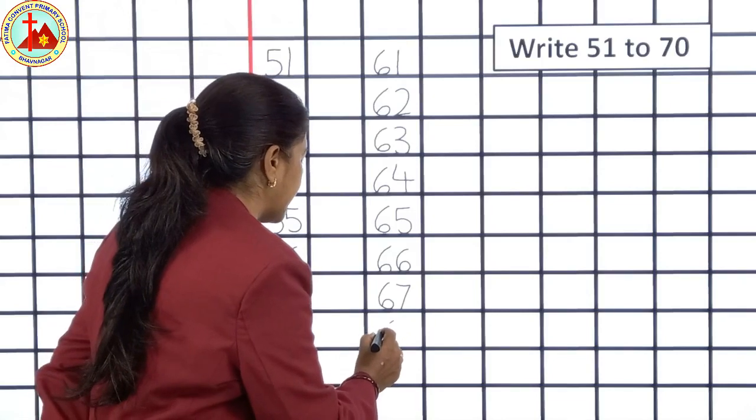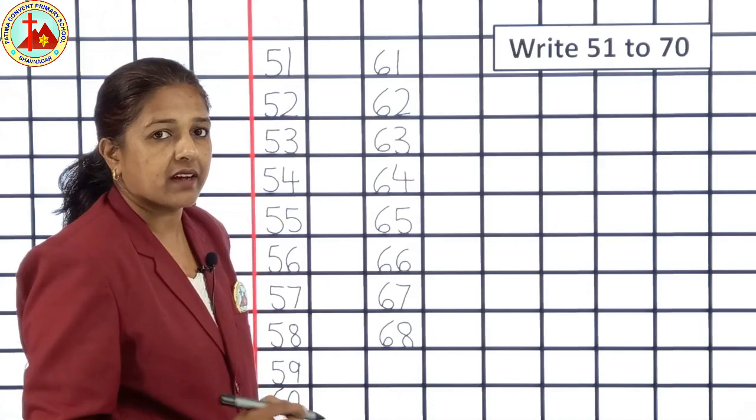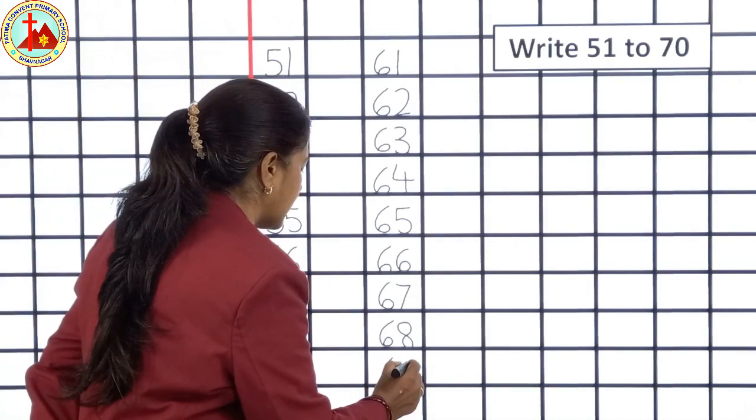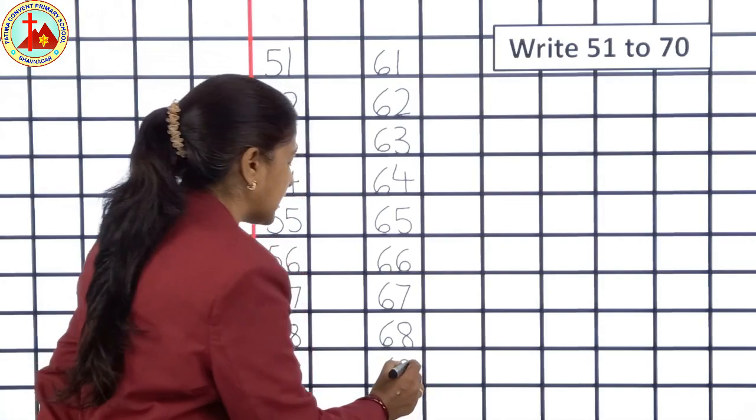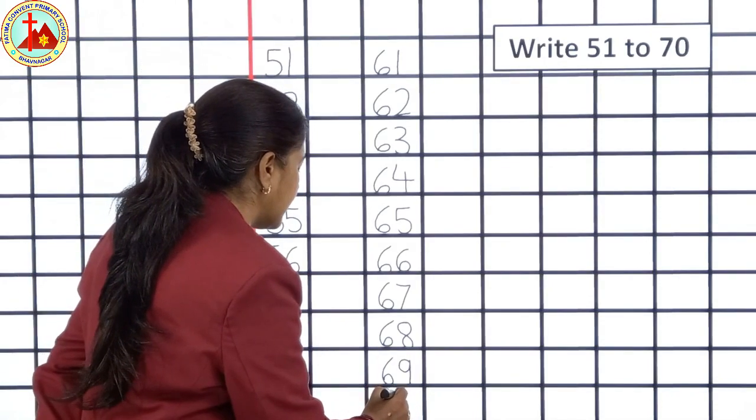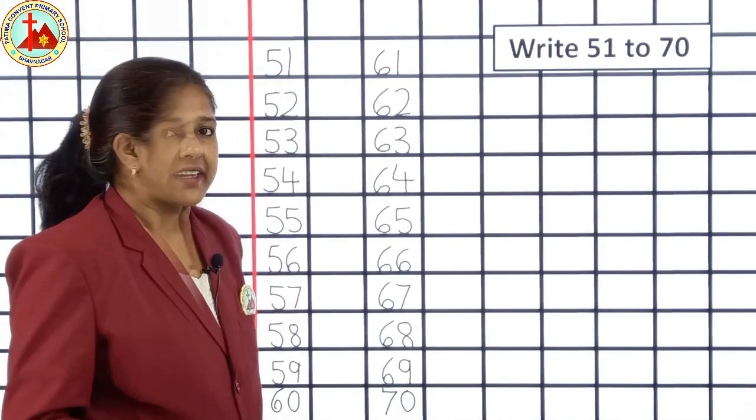Then, 6, 8, 68. After 68, 6, 9, 69. And, after 69, 7, 0, 70.